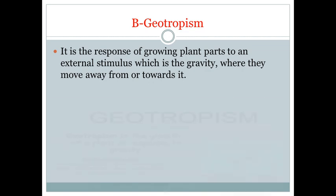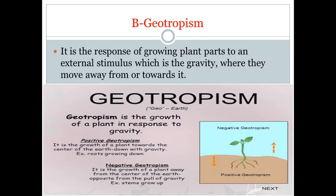The second type is geotropism — the response of a plant to gravity. When the roots of the plant move downwards, we call it positive geotropism. When the stem grows upwards, against the direction of gravity, this is called negative geotropism.